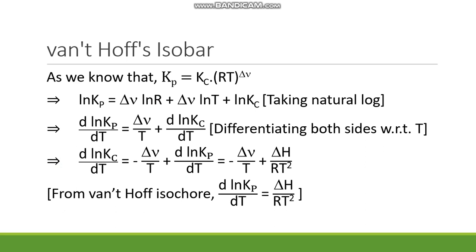In this regard, we have to start from this relationship: Kp equals Kc into RT to the power delta nu. Actually, van't Hoff isobar and van't Hoff isochore both are the temperature dependence of equilibrium constants. Van't Hoff isochore is the temperature dependence of equilibrium constant in terms of pressure, whereas van't Hoff isobar is the temperature dependence of equilibrium constant in terms of concentration. So in order to do this, we have to start from this relationship, the relation between Kp and Kc.